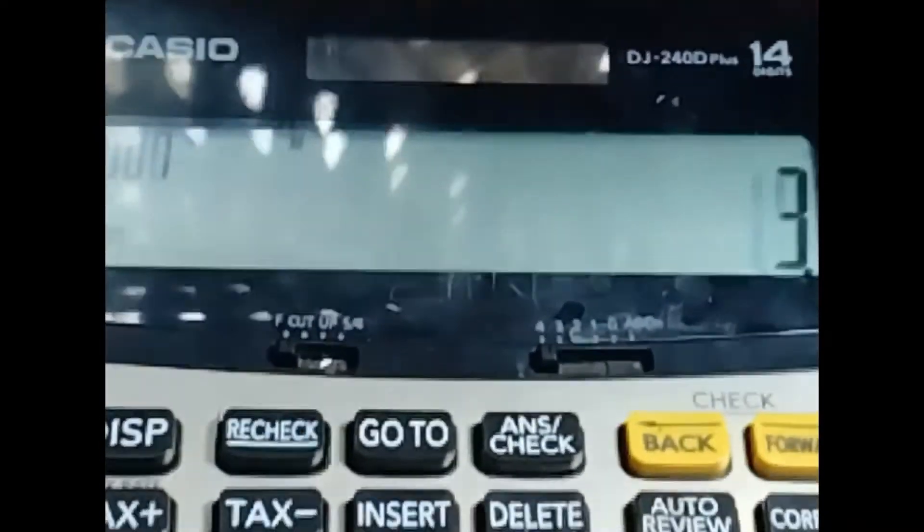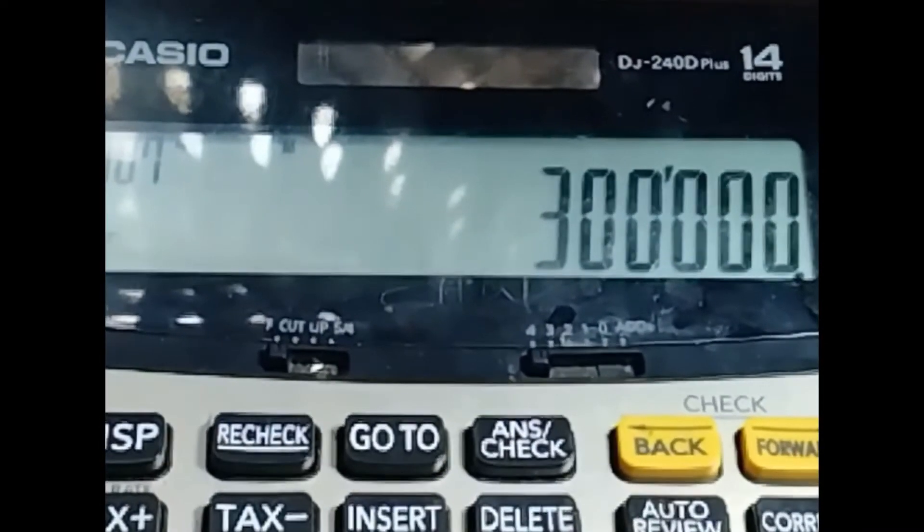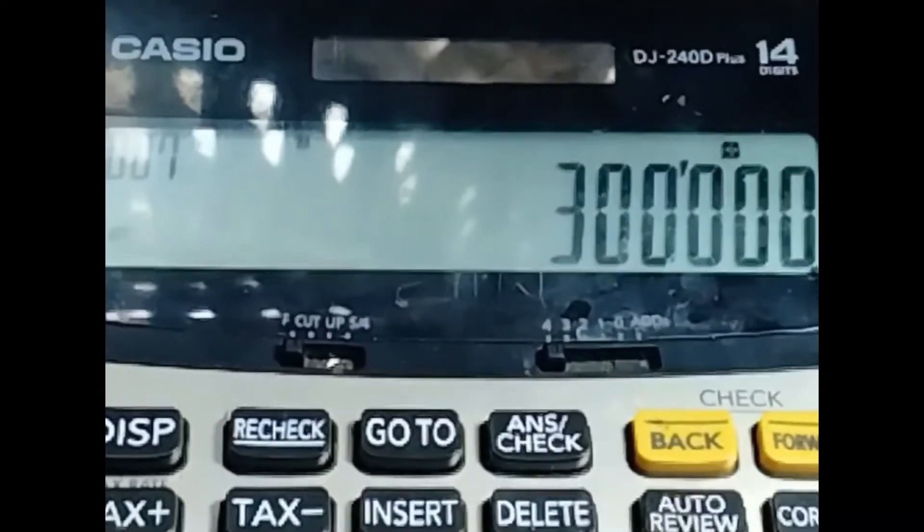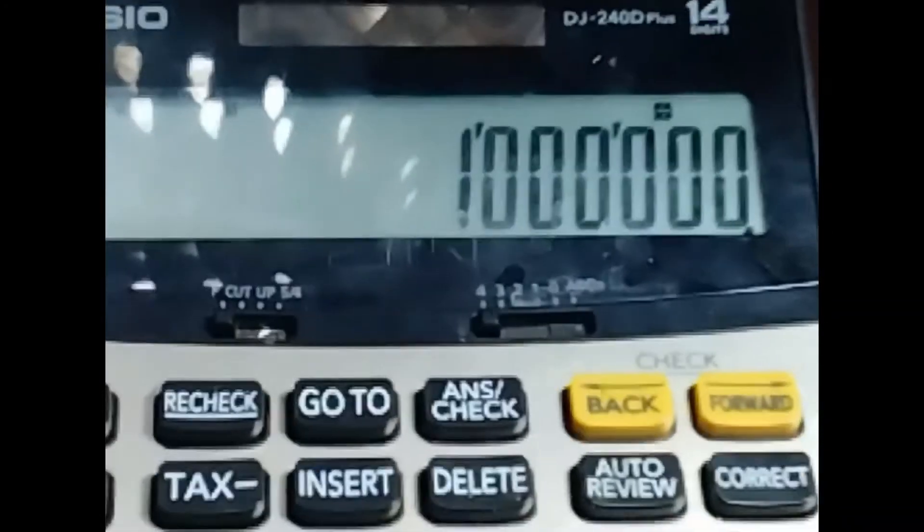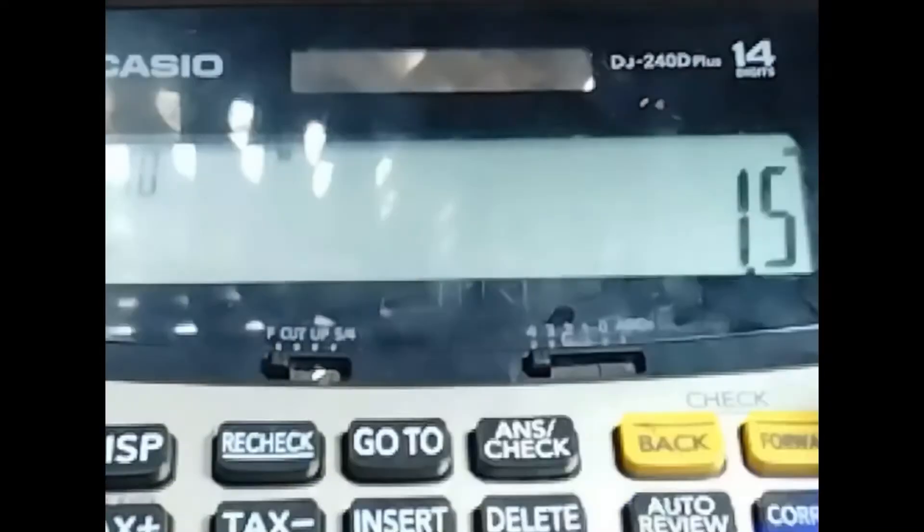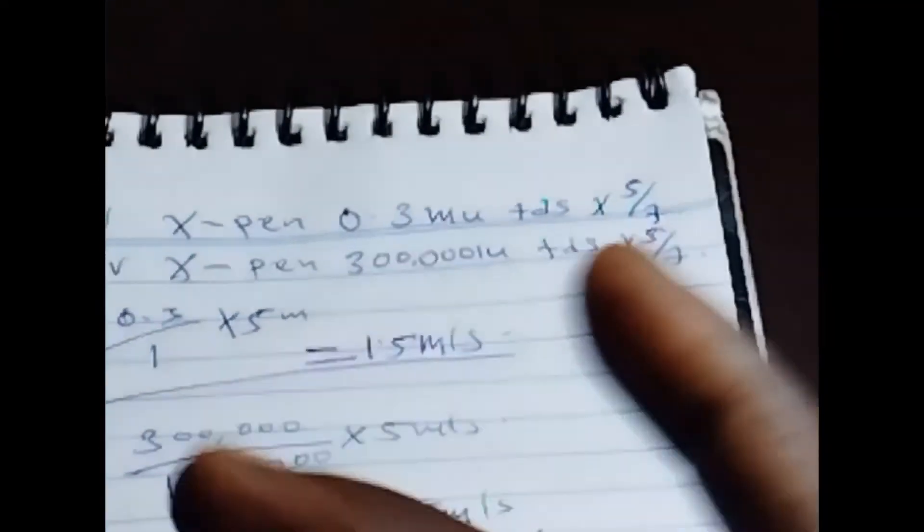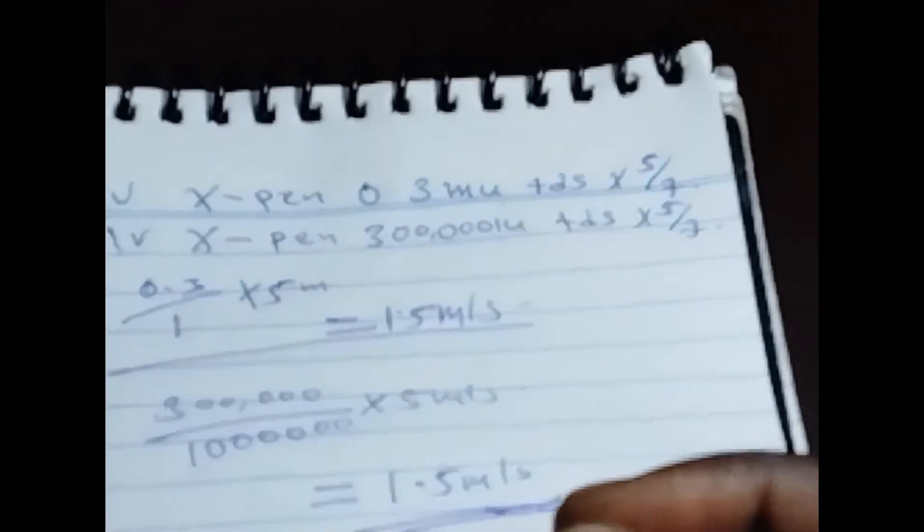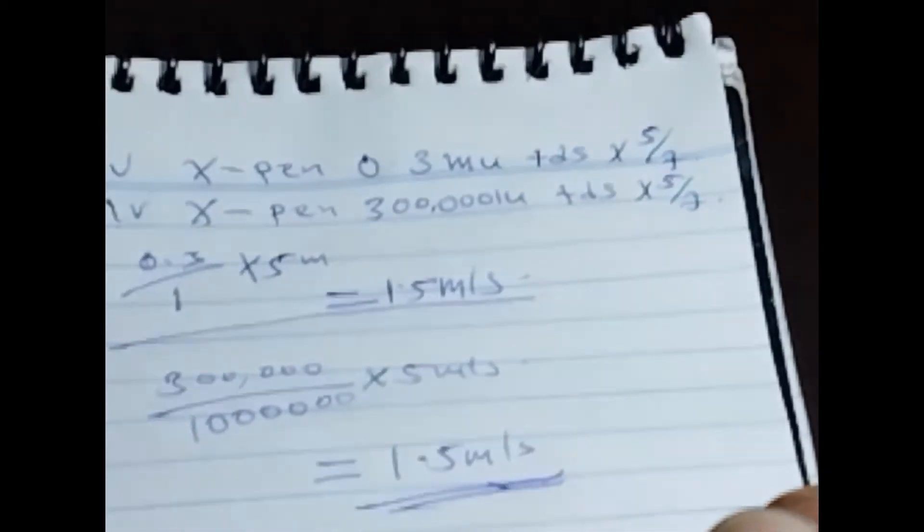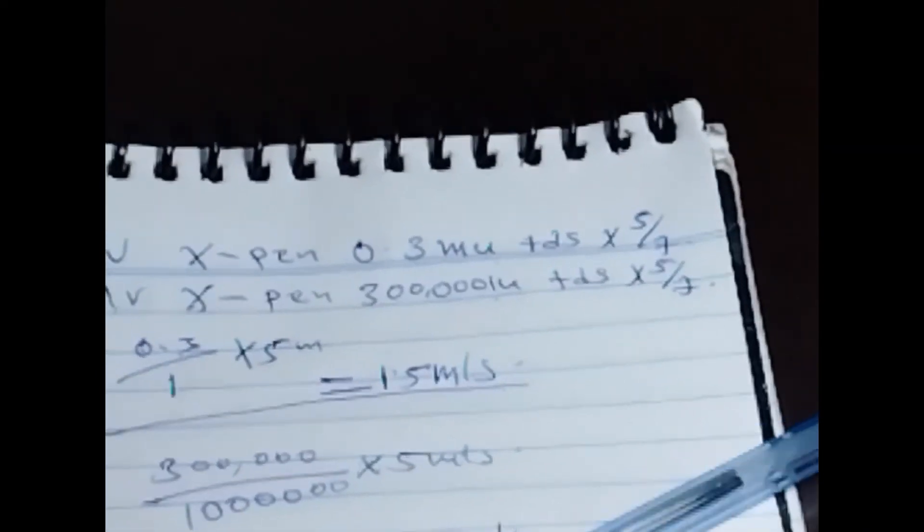So 300,000 divided by 1 million times five. See. So that is it. Thank you for watching.